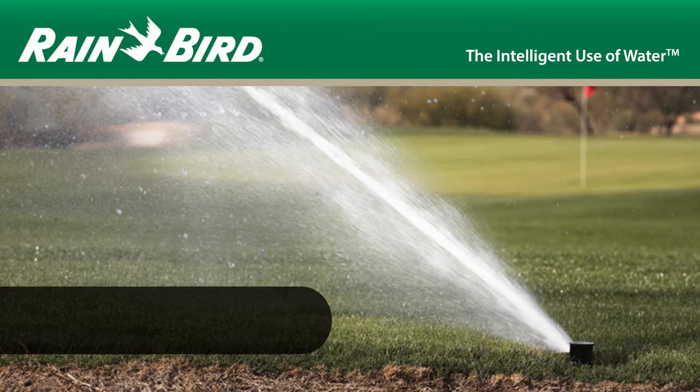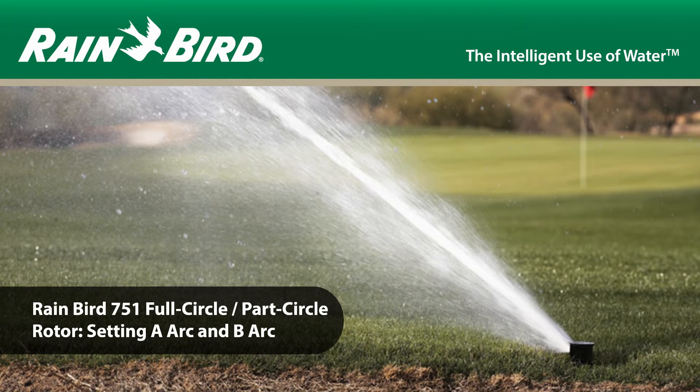In this video, we'll demonstrate how to change the arc setting of a Rain Bird 751 full circle part circle rotor from A arc to B arc.